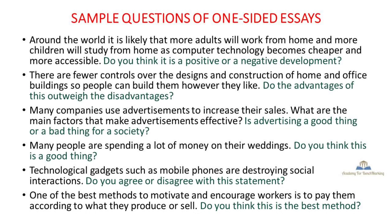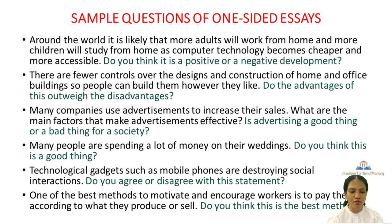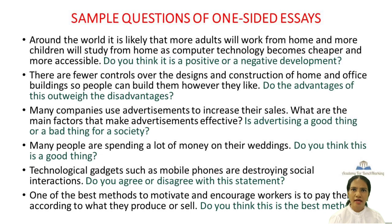Here I have composed some sample questions on one-sided essays — when you practice a variety of topics you get familiar with the ideas. For example, the second question: 'There are fewer controls over the designs and construction of home and office buildings so people can build them however they like. Do the advantages of this outweigh the disadvantages?' For this kind of question, I recommend an 80/20 ratio — meaning you can write four points on one side and one point on the other, or three points on one side and two on the other. Just don't make it balanced — do not write equal points on both sides.